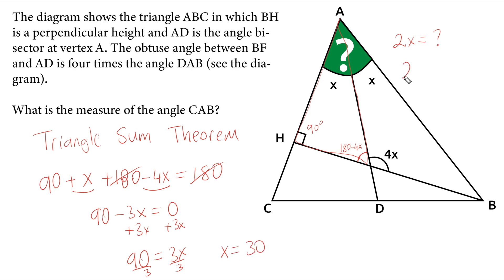So therefore, 2 times 30 here is equal to 60 degree.